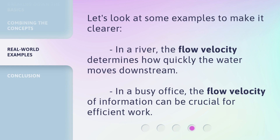Let's look at some examples to make it clearer. In a river, the flow velocity determines how quickly the water moves downstream. In a busy office, the flow velocity of information can be crucial for efficient work.